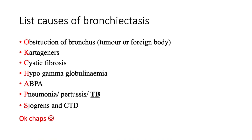Causes of bronchiectasis can be remembered with the mnemonic OKCHAPS: Obstruction of the bronchus by tumour or foreign body; Kartagener's syndrome (with sinus issues and infertility); Cystic fibrosis; Hypogammaglobulinaemia; Allergic bronchopulmonary aspergillosis; Post-infectious pneumonia or pertussis or TB; and Sjögren's and other connective tissue diseases.